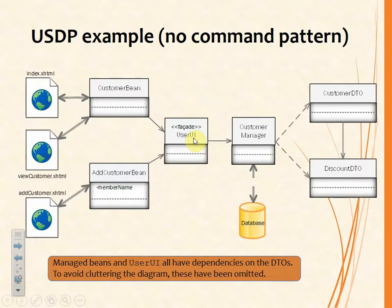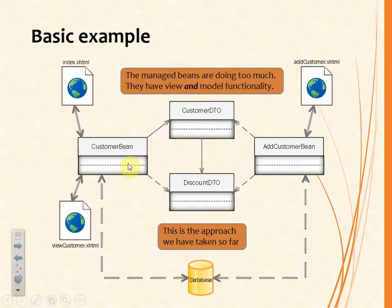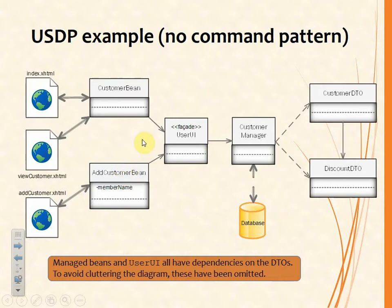We know that there's going to be some kind of manager class that will control or manage the entities within the application, and those entities are going to be represented in data transfer objects. DTO — data transfer object — is another design pattern and we've been using that already without really telling you about it. What we're going to do is make the user UI a facade. In the previous example the customer bean was having to do all of this interaction with the complexities of interacting with other parts of the application. We've now factored that out, so these customer bean and add customer bean managed beans now only have to interact with the facade that is the user UI class.